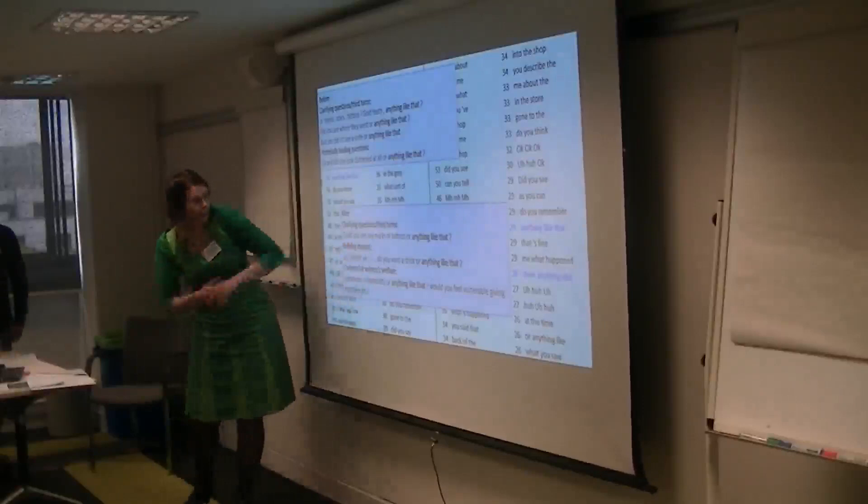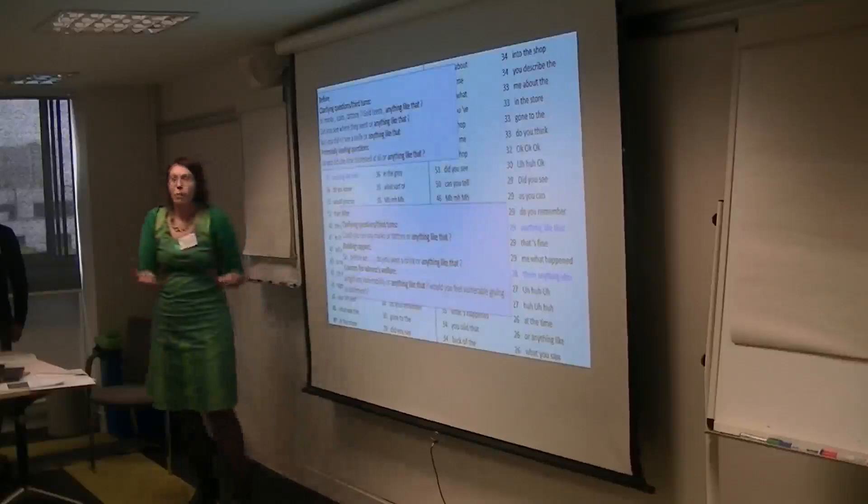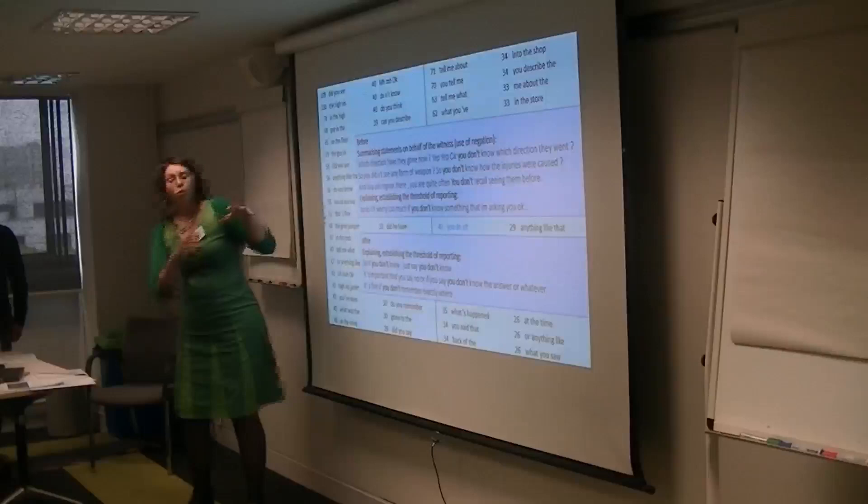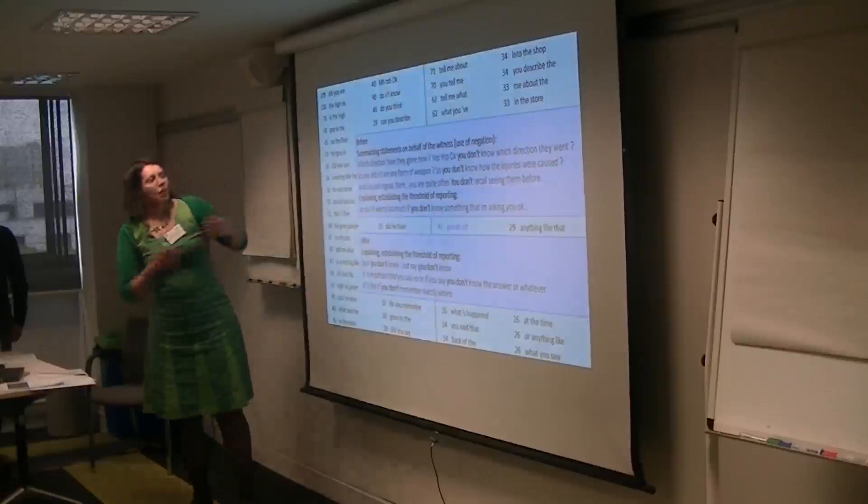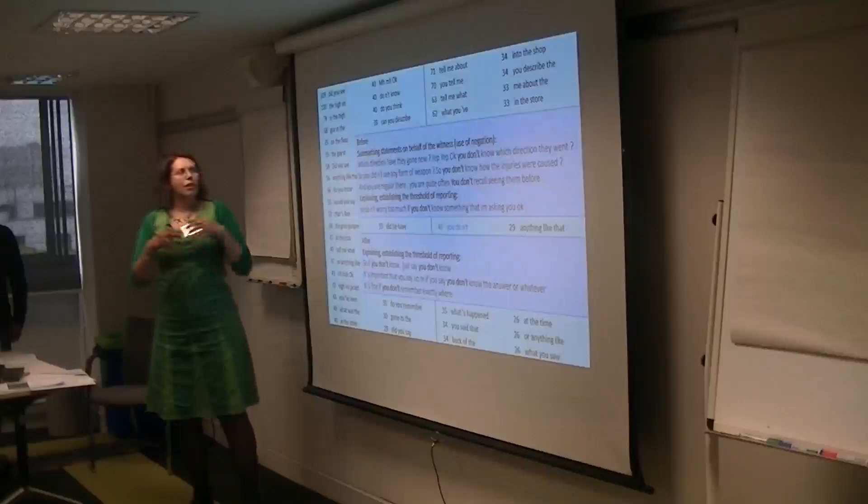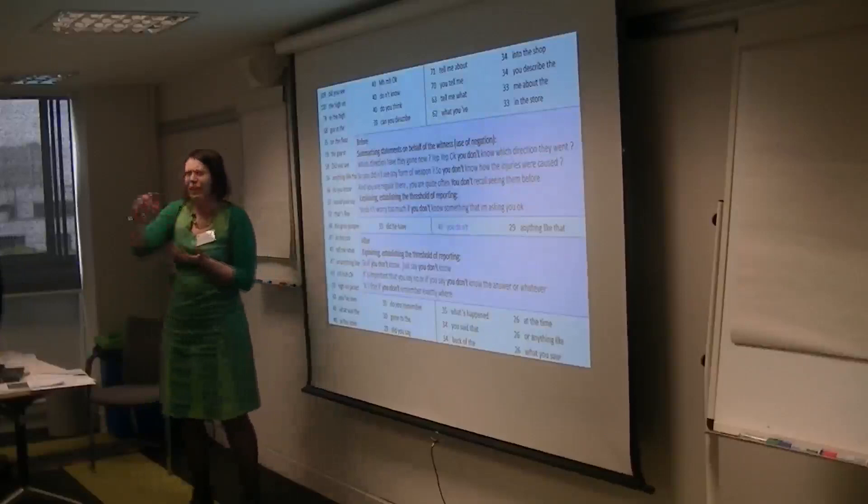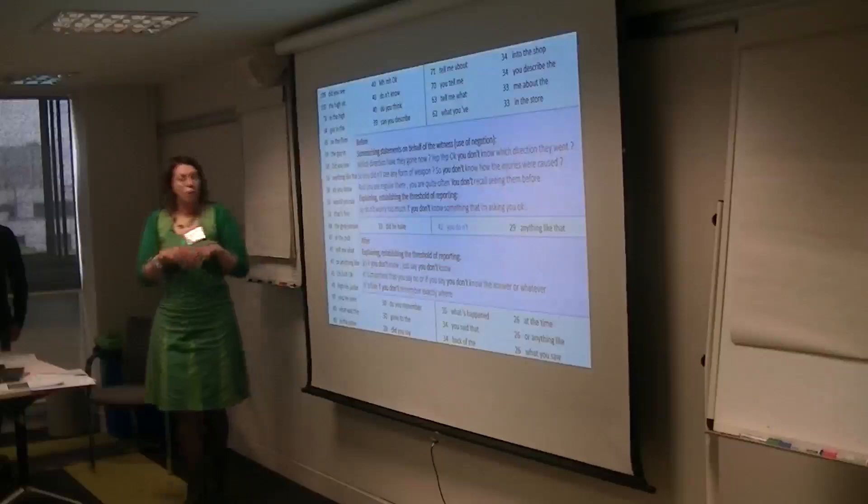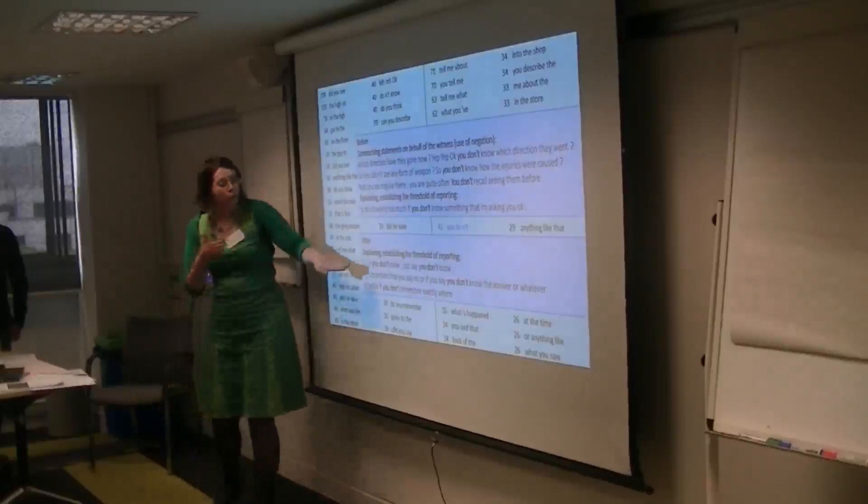And another one is you don't. It's something that stuck out in the corpus so we wanted to explore that a bit more in detail. And again in the before corpus you don't is used mainly to summarize statements on behalf of the witness, and it also has this kind of negative connotation. Whereas in the after corpus it is used in a different function, in the function of explaining and establishing the threshold of reporting. So if you don't know just say you don't know, which is very different from the previous examples. It's important that you say no or you say you just don't know the answer.